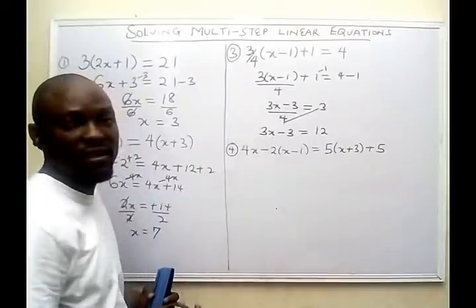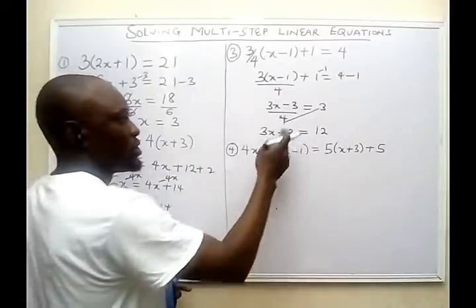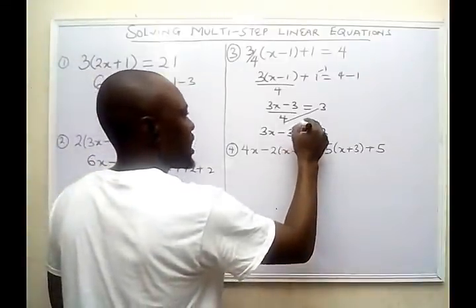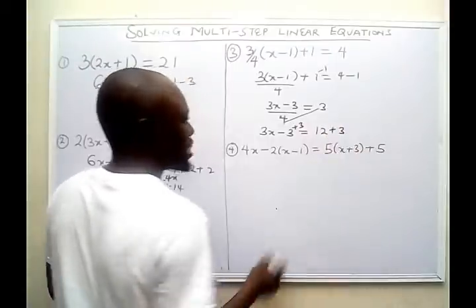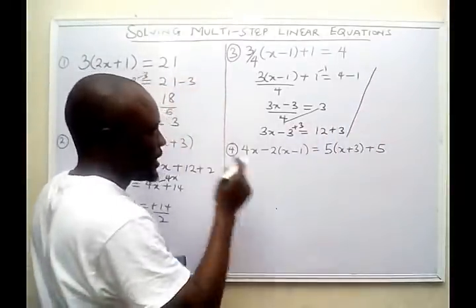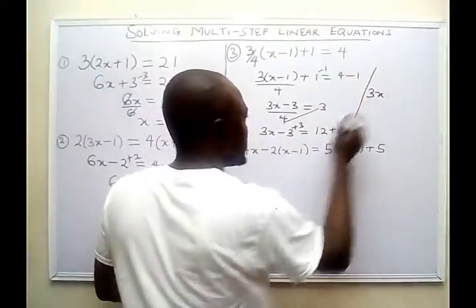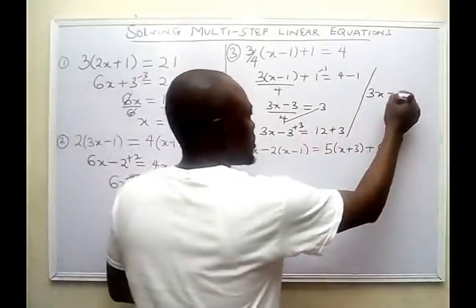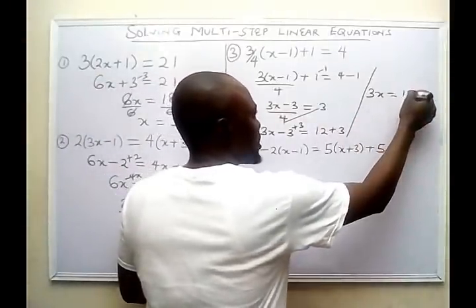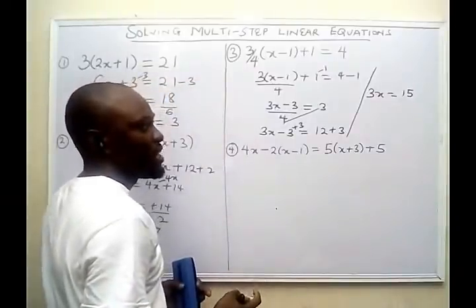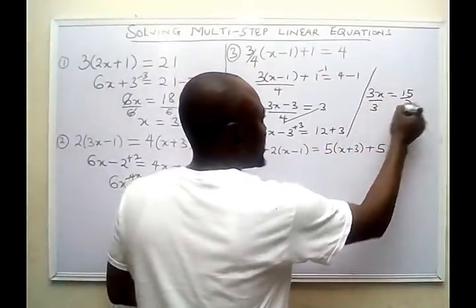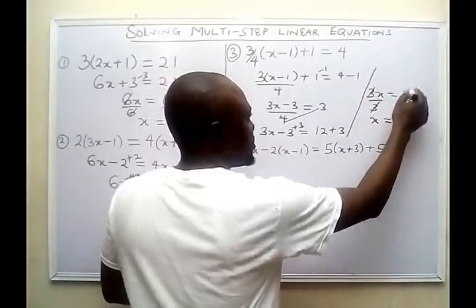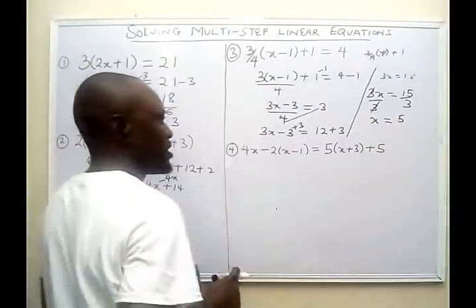Now I want to find the value of the unknown, so I want all the numbers on the other side of the equation. I add 3 to both sides: minus 3 plus 3 gives 0, and 12 plus 3 gives 15. So I have 3x equals 15. Dividing both sides by 3, x equals 15 divided by 3, which gives me 5.